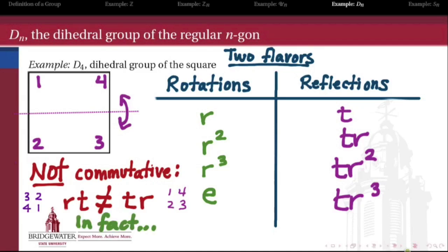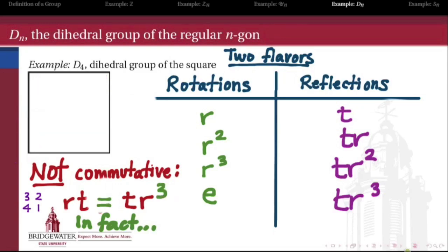We can say a little more: RT is really the same thing as T times R³. One of the ways of defining the dihedral group is by writing down two generators — the basic rotation R and reflection T — and then writing down relations, like RT = TR³. We can actually completely define the dihedral group this way. But for now, let's just note that this is an example of a non-abelian group, because R and T clearly don't commute.